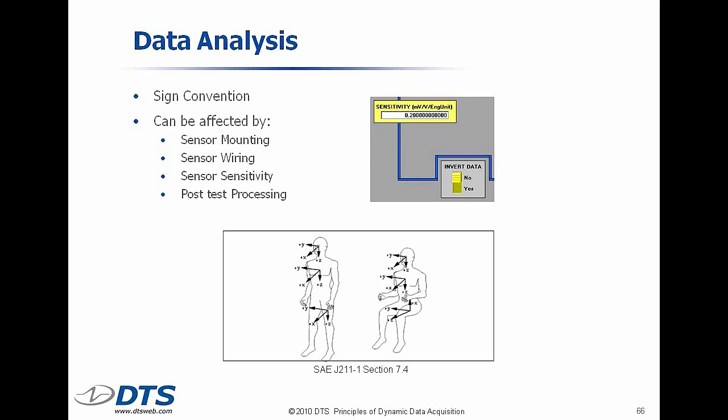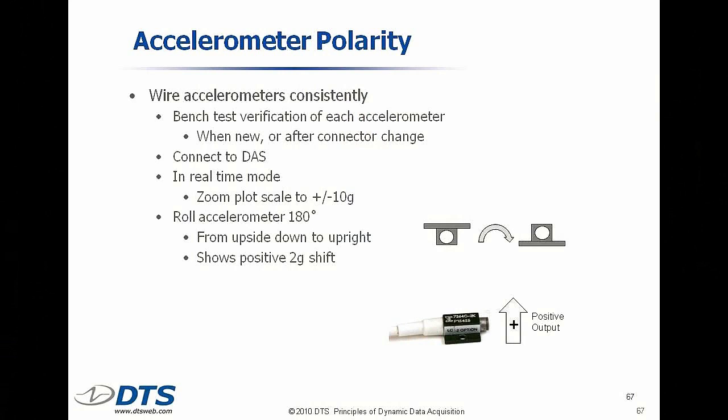Sign conventions are affected by the mounting of the transducers, by the way you wire them, and even by the numbers you put into the software. This is where you really need an empirical test. When you run a test and you think you've done everything right, and then you hit the dummy on the back of the head to accelerate the head forward, it better go positive. You hit him on the left side of the head to make it go to the right, that better be positive. These are the kinds of things you do in the test world to make sure you're getting what you think you're getting. Empirical checks are very important.